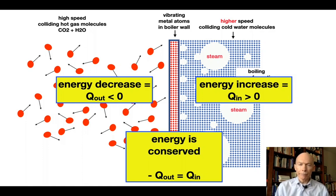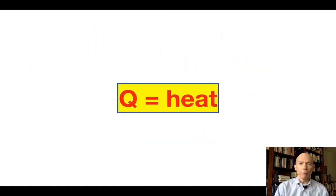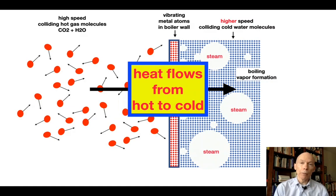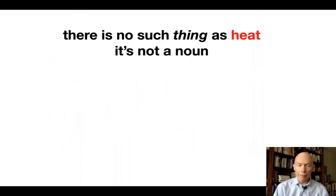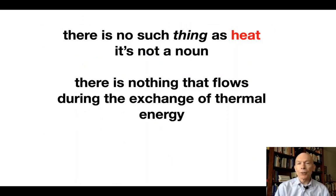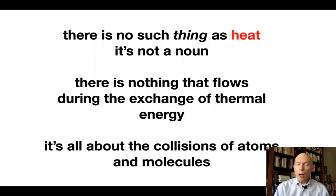But what do we call Q? This is where we get into a problem. You see, we call Q heat. And more than that, we suggest that Q, as heat, flows from hot to cold. That's what we say quite often. Heat is flowing from the hot to the cold. Well, again, what's the problem with that? Here's the problem. There's no such thing as heat. It's not a noun. There's nothing that actually flows during the exchange of thermal energy. It's all about the collision of atoms and molecules.